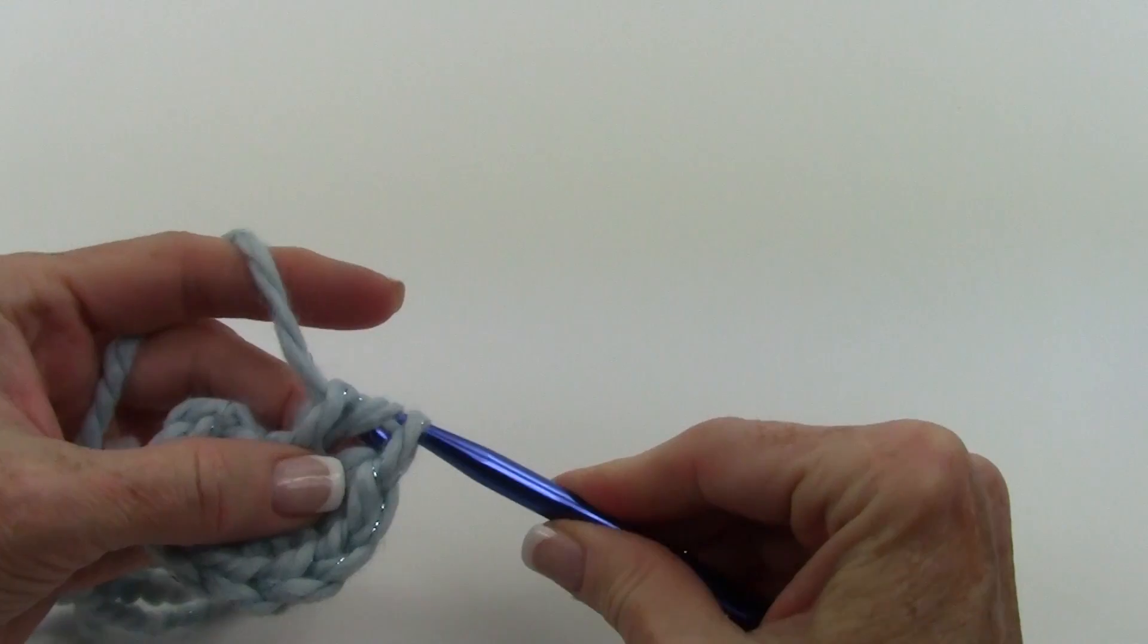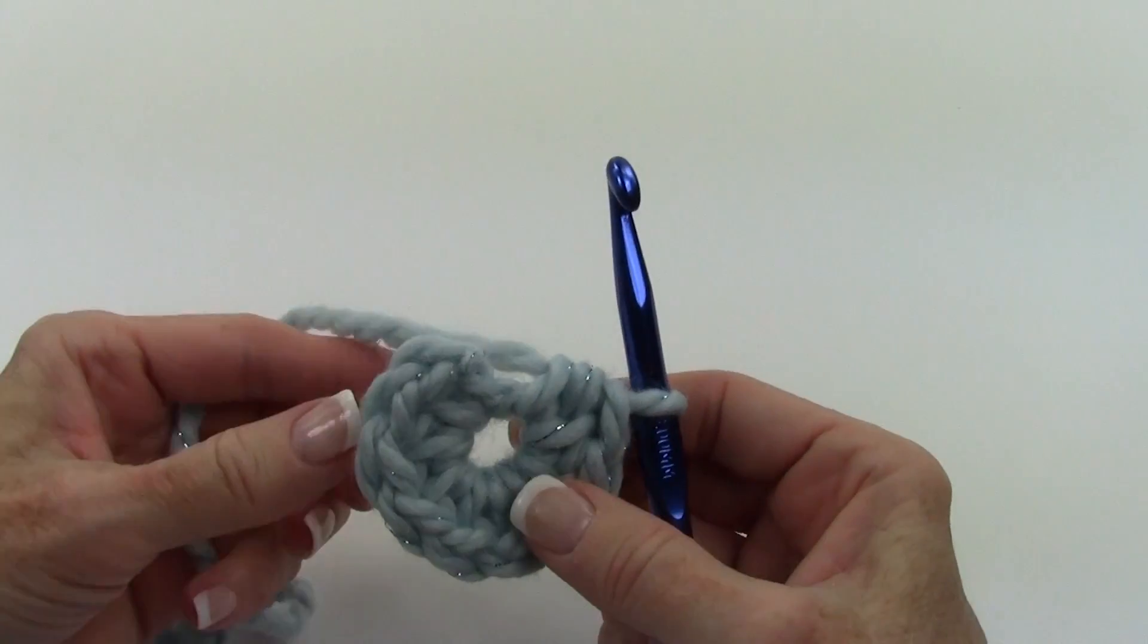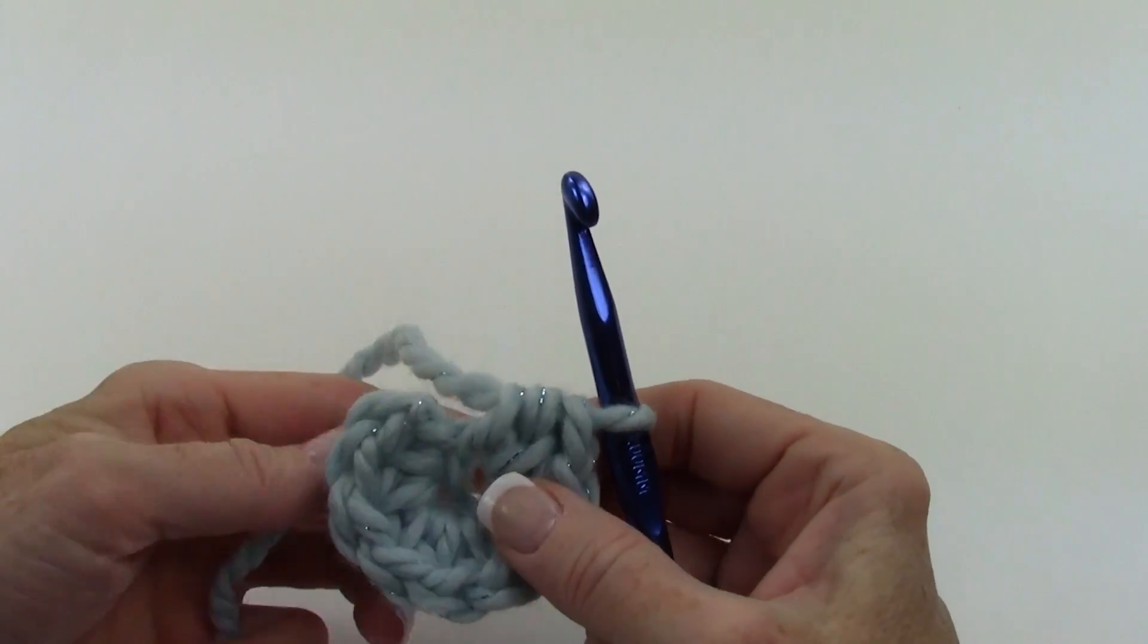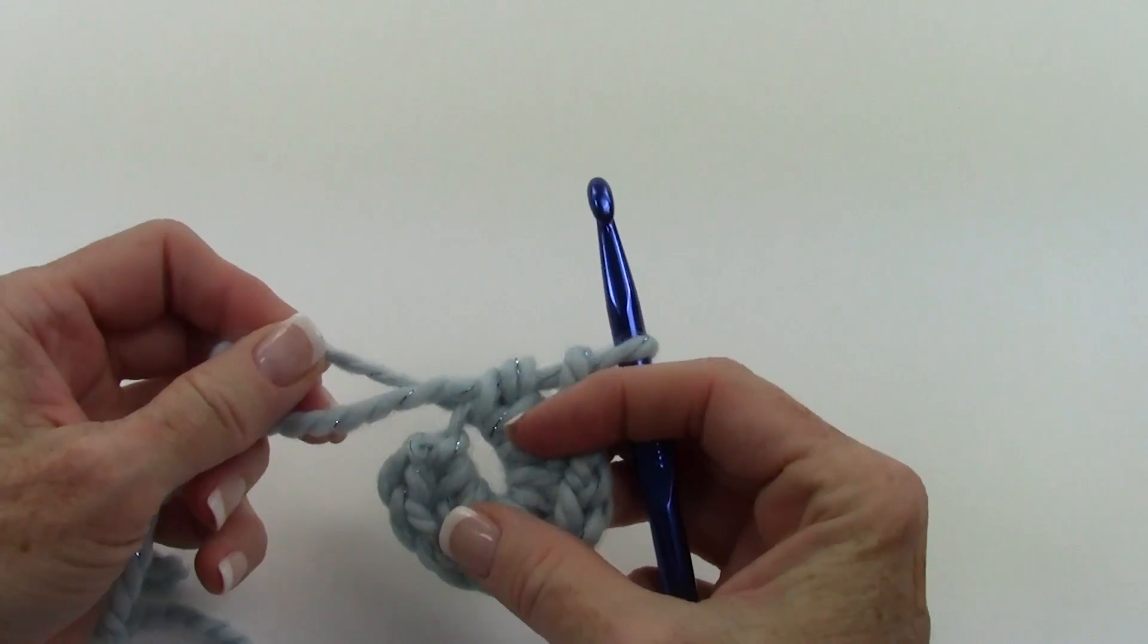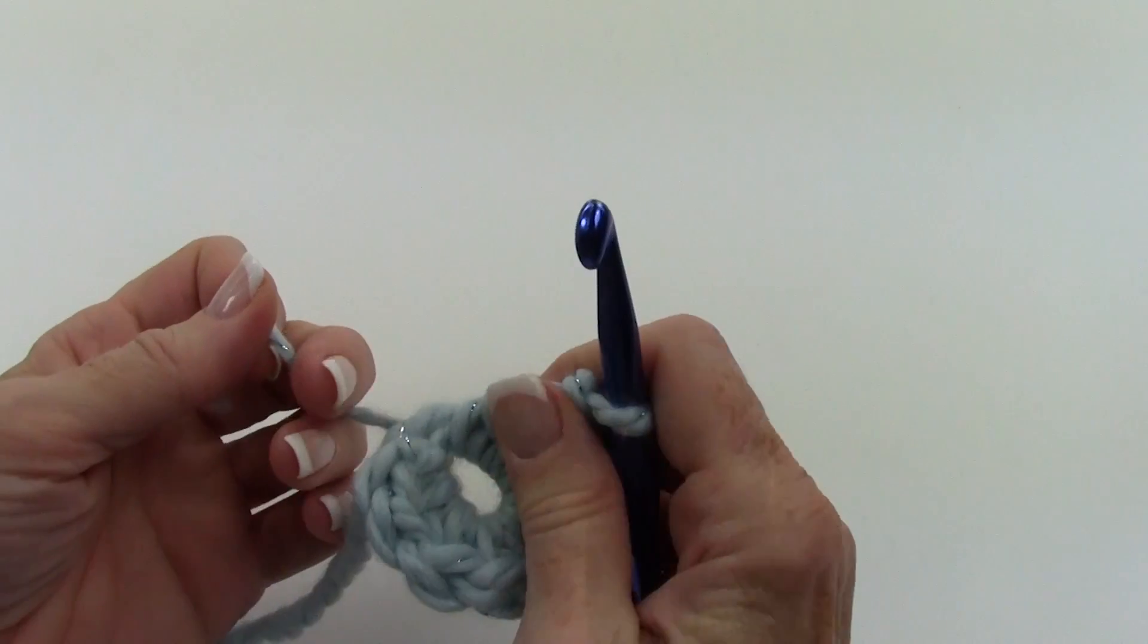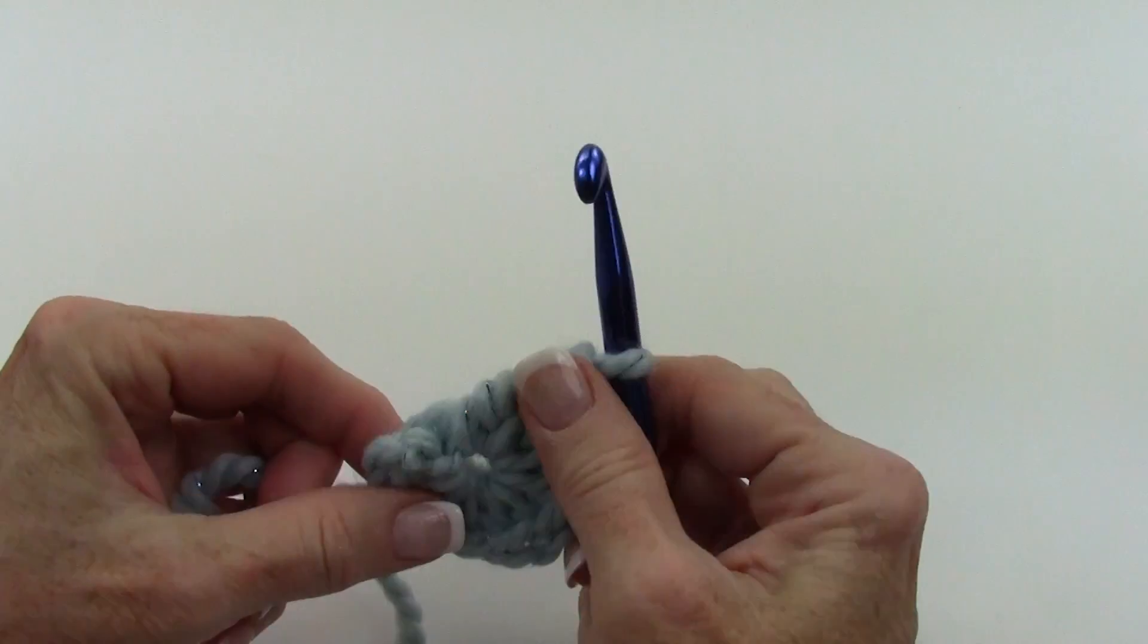So now you get to see the magic part. When you're done getting all your stitches in here, all you do is pull that yarn end here, and the circle in the middle disappears.